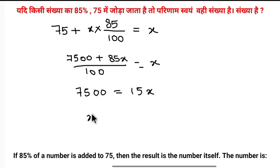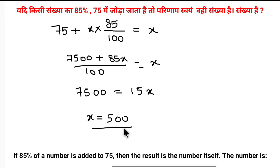75 divided by 0.15x is equal to 0.15x, so x value is equal to 500. Thank you.